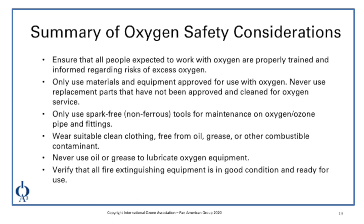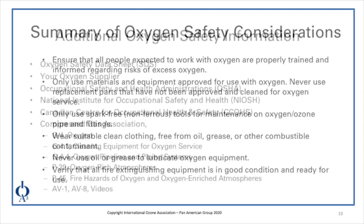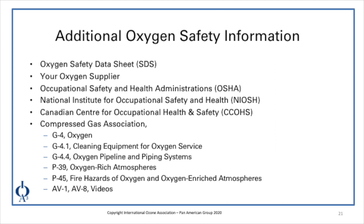All oxygen apparatus and equipment must be properly identified and escape routes must be maintained clear at all times. Additional oxygen safety information is available: consult the oxygen safety data sheet, which your oxygen supplier should be able to provide. Your oxygen supplier is also a good source of information. Much information is available through OSHA, NIOSH, and the Canadian Center for Occupational Health and Safety. The Compressed Gas Association documents cover oxygen, cleaning equipment for oxygen service, oxygen pipeline and piping systems, oxygen-enriched atmospheres, and fire hazards of oxygen.